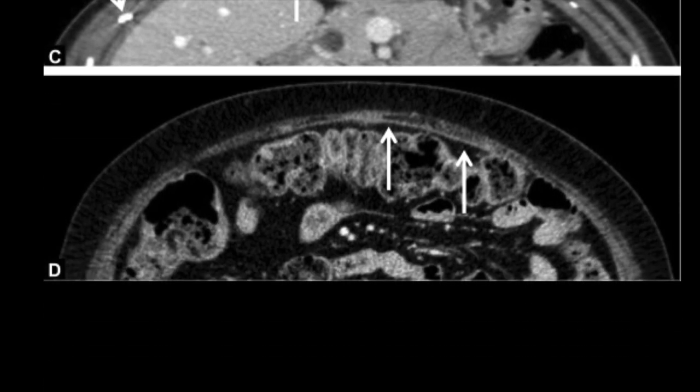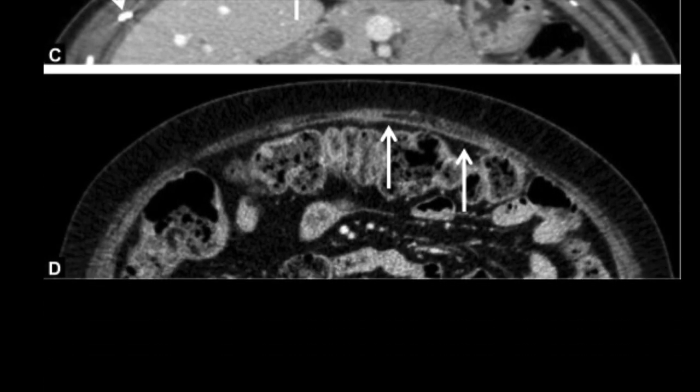Here we see a thin, continuous, hyper-attenuating line located behind the rectus muscle corresponding to a retromuscular mesh — this was ProGrip. Note that it is nearly impossible to differentiate between intraperitoneal and retromuscular locations by CT alone.